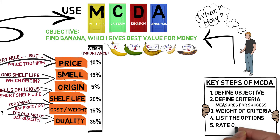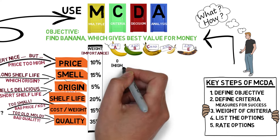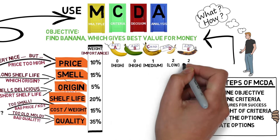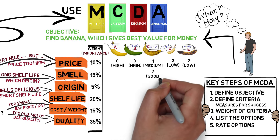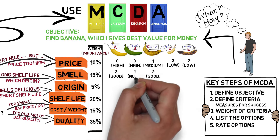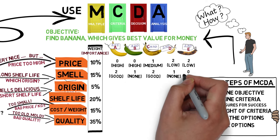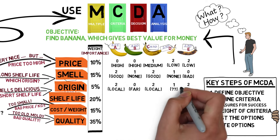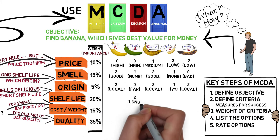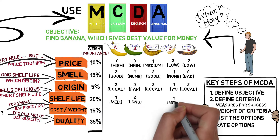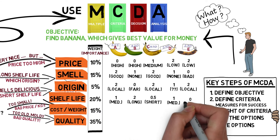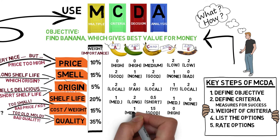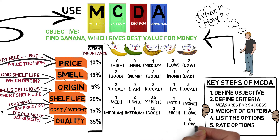Now you list your choices of bananas and rate each of them for each criterion. The best performing option gets the highest number of points, and the worst performing option the lowest: 2, 1, and 0. You can see that it's not always the same banana which performs best, and you have to accept a few trade-offs.